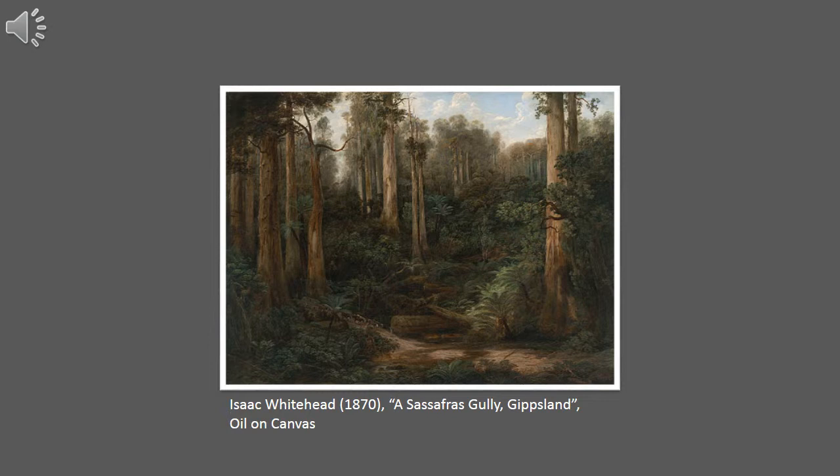Natural landscapes are an inherent part of the Australian experience, having shaped and influenced our modern national histories, stories and identities. One particular image which encapsulates this Australian motif is Isaac Whitehead's 1870 oil on canvas, depicting a forested gully in Gippsland.